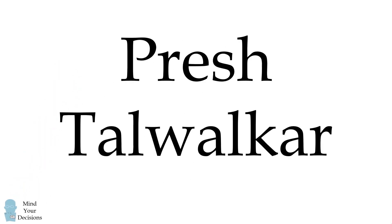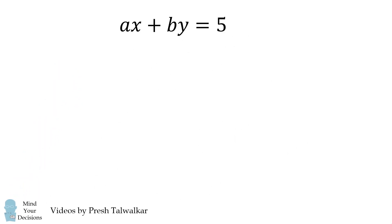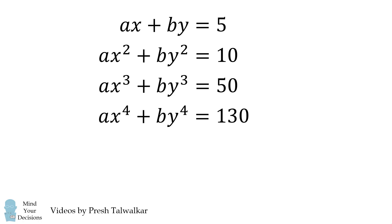Mind your decisions, I'm Presh Talwalkar. Suppose ax plus by equals 5, ax squared plus by squared equals 10, ax cubed plus by cubed equals 50, and ax to the power 4 plus by to the power 4 equals 130.